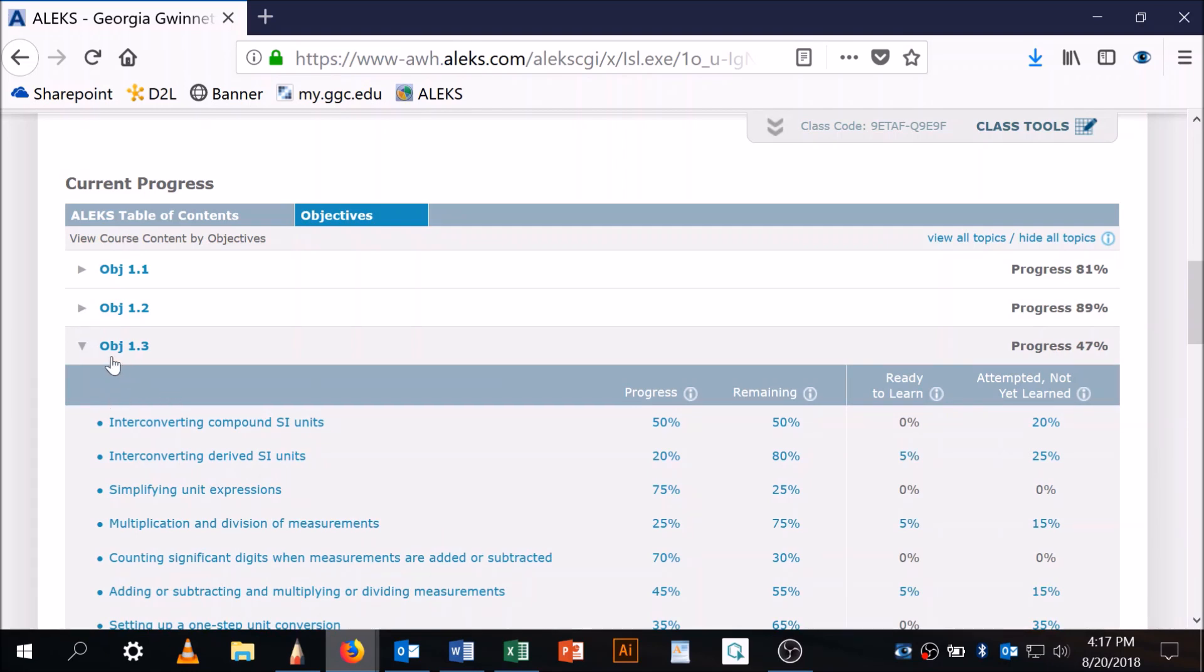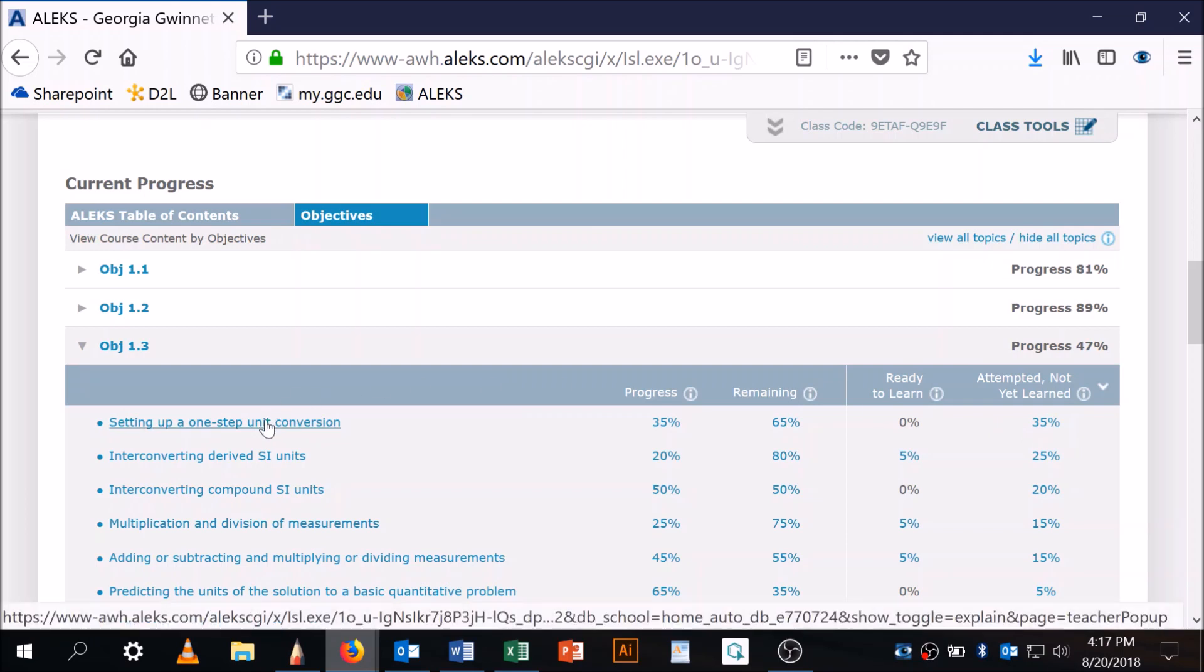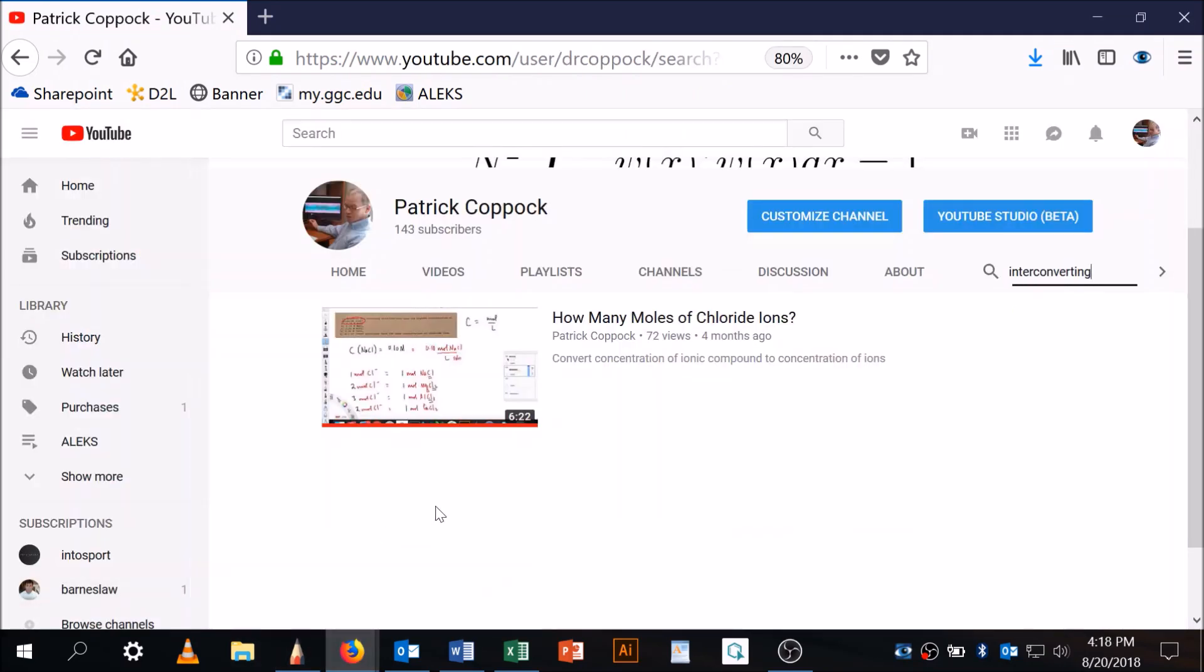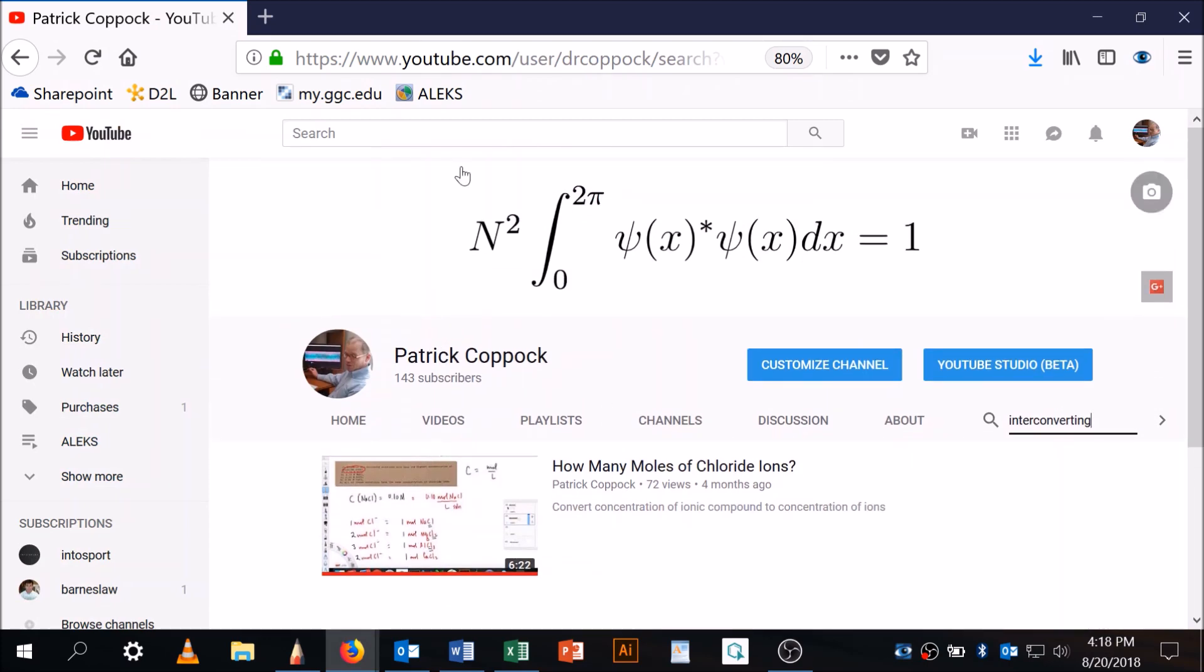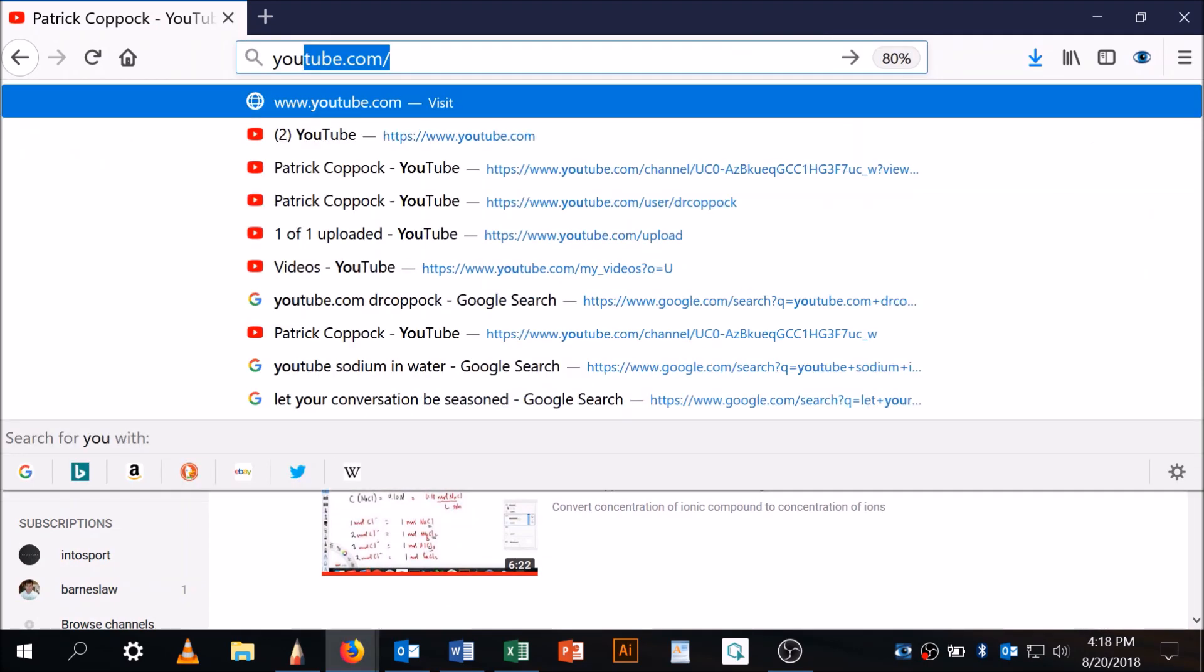Let's go here to this one. This was the one that you guys did, I think, on Saturday. So let's go here and we'll do those in decreasing order. Setting up a one-step conversion, I have a video on that one already. So go to my YouTube channel and search. Let me show you how to do that. You come here, go to YouTube channel. Actually, pretend like I'm not there. Watch this.